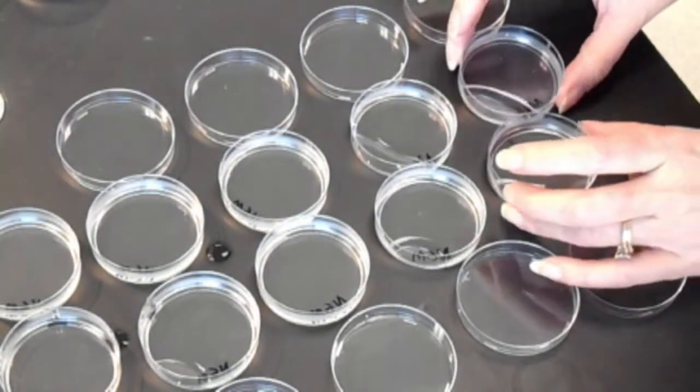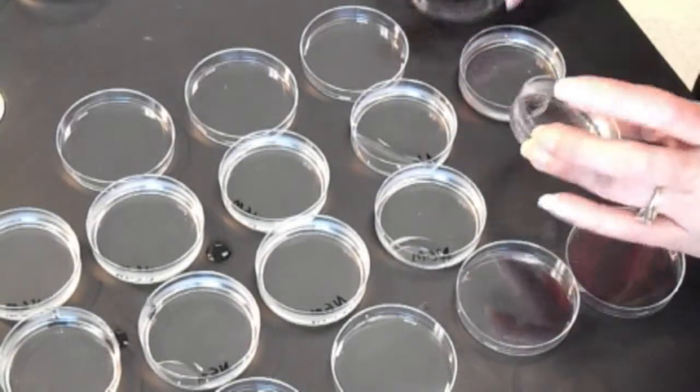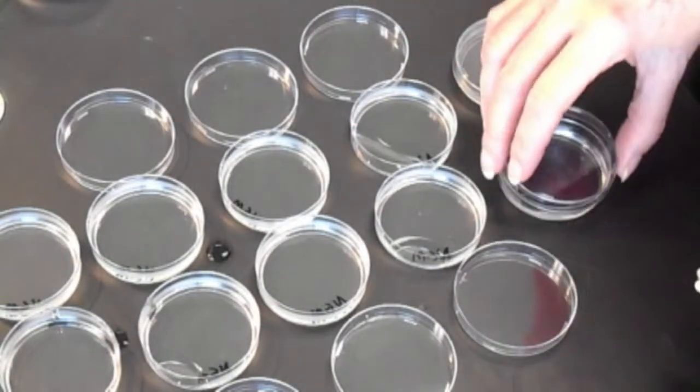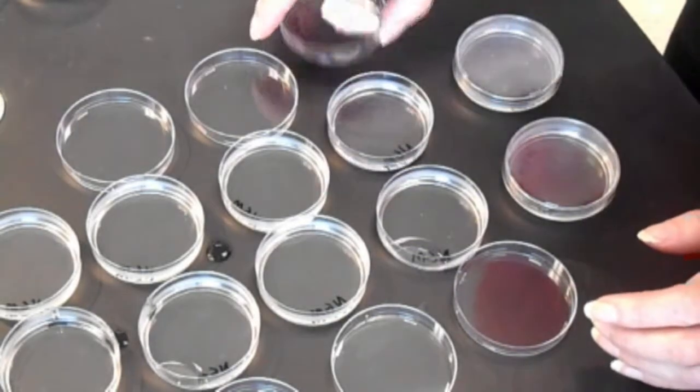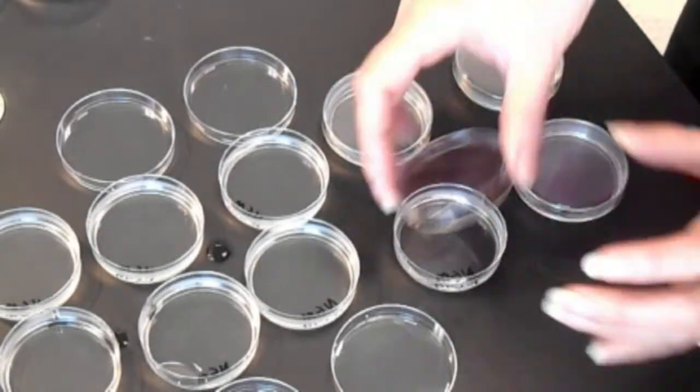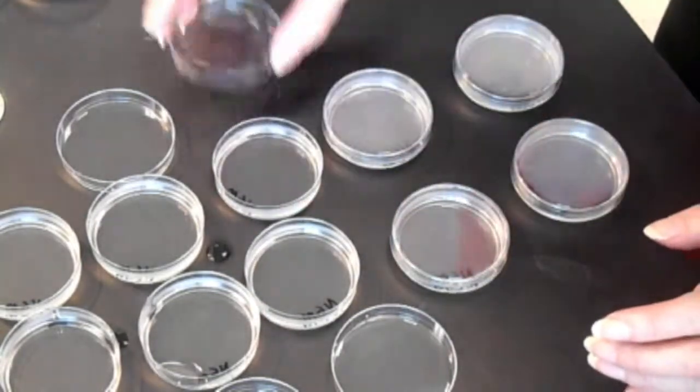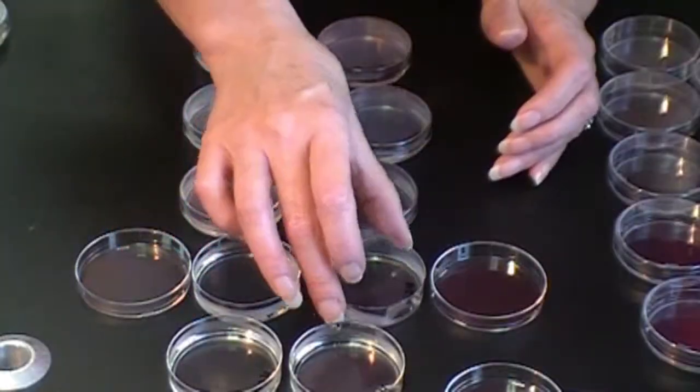And then I just give them a little swirl to make sure the bottom of the plate is coated. Pop the lid back on. Remember, we're working in a sterile environment as far as we can control. We've cleaned the lab benches off with our alcohol mixture. And then we just cover the plates as quickly as possible. And let them set up.